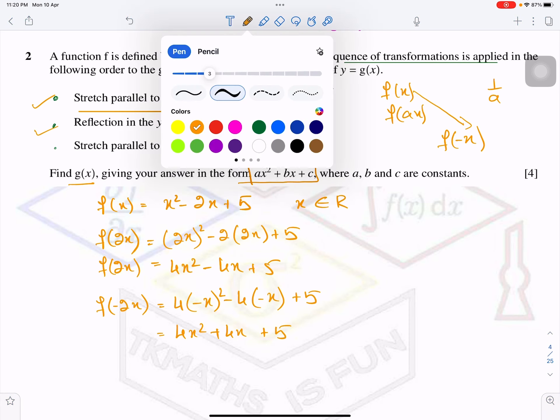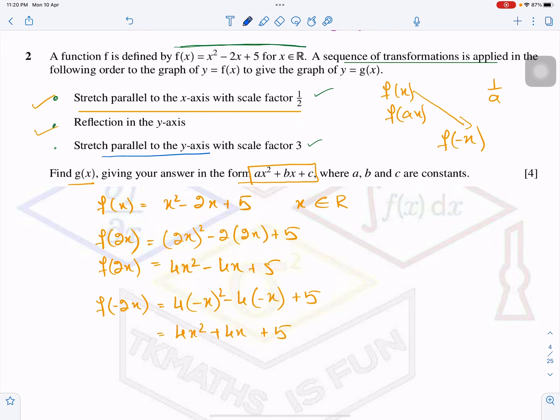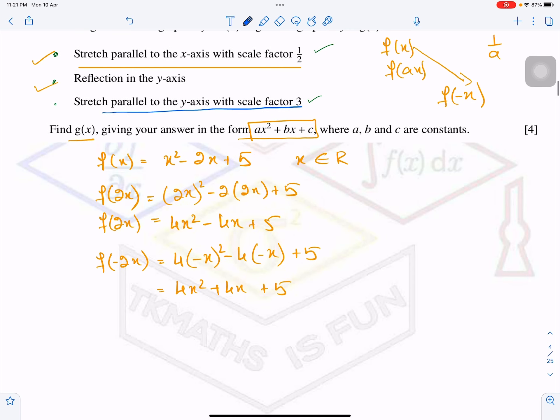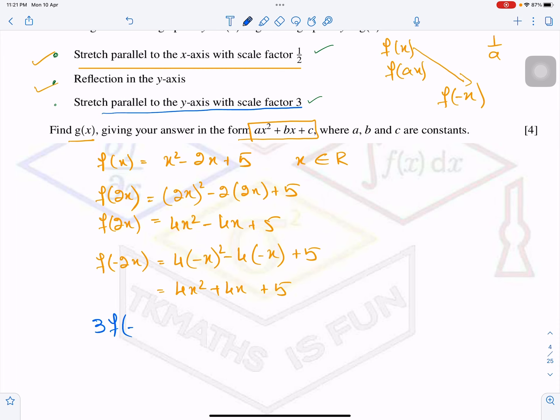Now you have to apply the third case which is stretch parallel to the y-axis with scale factor 3. Now this means that you will multiply the function by 3, because the question was saying in the same sequence. So that's why I am applying the third one in the last. So I will multiply this whole thing by 3, this whole function. So my equation will become 12x squared plus 12x plus 15. So I can call this function as my g(x). And this is what the question was saying, give your answer in this form. So I hope you understood it.